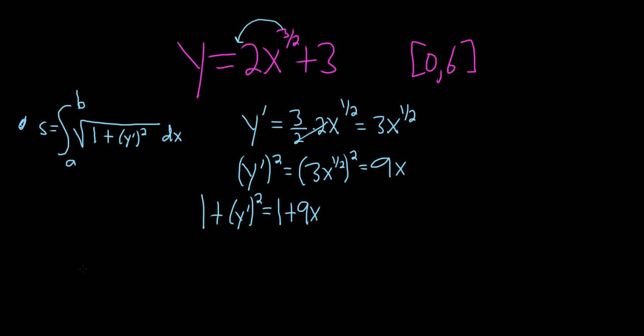So now let's go ahead and try to integrate this. So little s is equal to the definite integral. So our a is equal to 0 and our b is equal to 6.